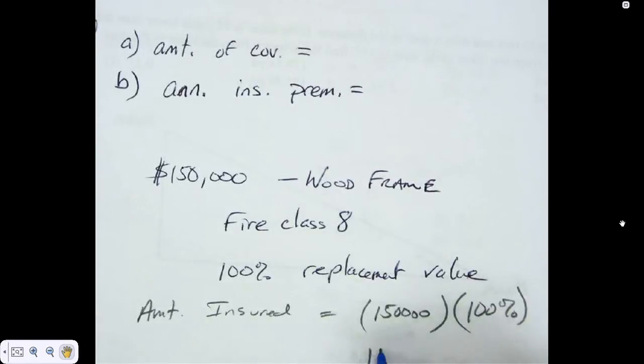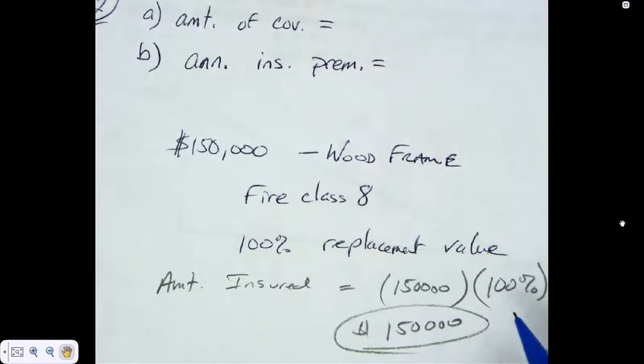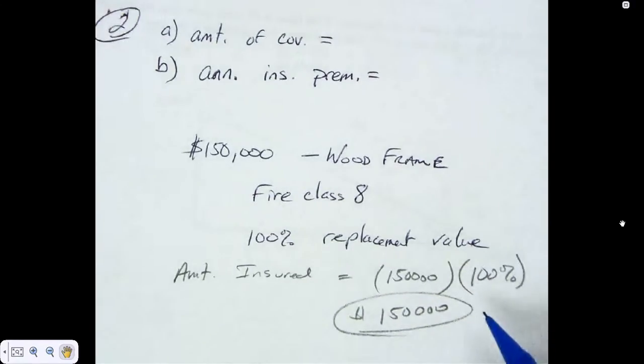But that's only because they insured what? 100% of it. On another one, if they had said 80%, I would first need to find out how much they were covering it for, right? And that's the number I would have actually gone for. We need to look at this table.